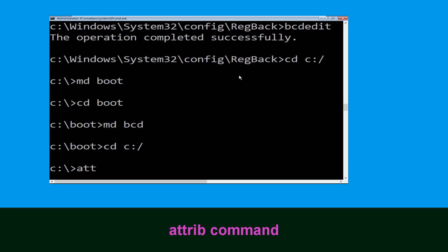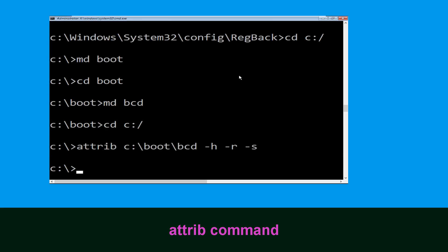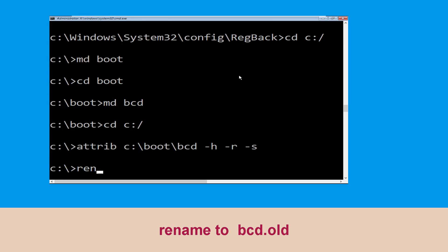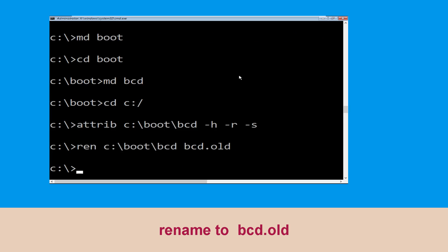Type attrib C:\boot\bcd -h -r -s and hit enter. Now type ren C:\boot\bcd bcd.old then hit enter.